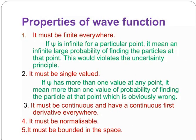The properties of wave function: It must be finite everywhere. If psi is infinite for a particular point, it means an infinitely large probability of finding the particle at that point, which would violate the uncertainty principle. It must be single valued. If psi has more than one value at any point, it means more than one value of probability of finding the particle at that point, which is obviously wrong. It must be continuous and have a continuous first derivative everywhere. It must be normalizable. It must be bounded in the space.